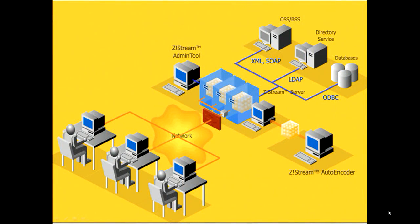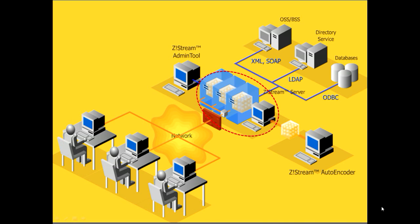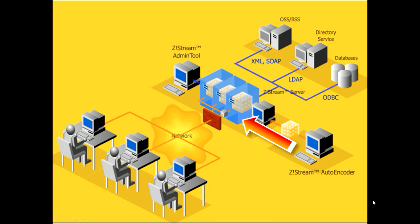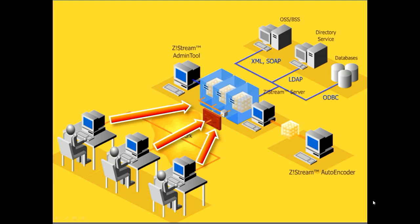The big picture of the Zstream configuration is an example of building a software library. It consists of clients, server, administration server, encoder, and backend servers. All the application software are collected on the server, and several end users can connect to the server through the web. With a single click on the web desktop, they can access the application software.